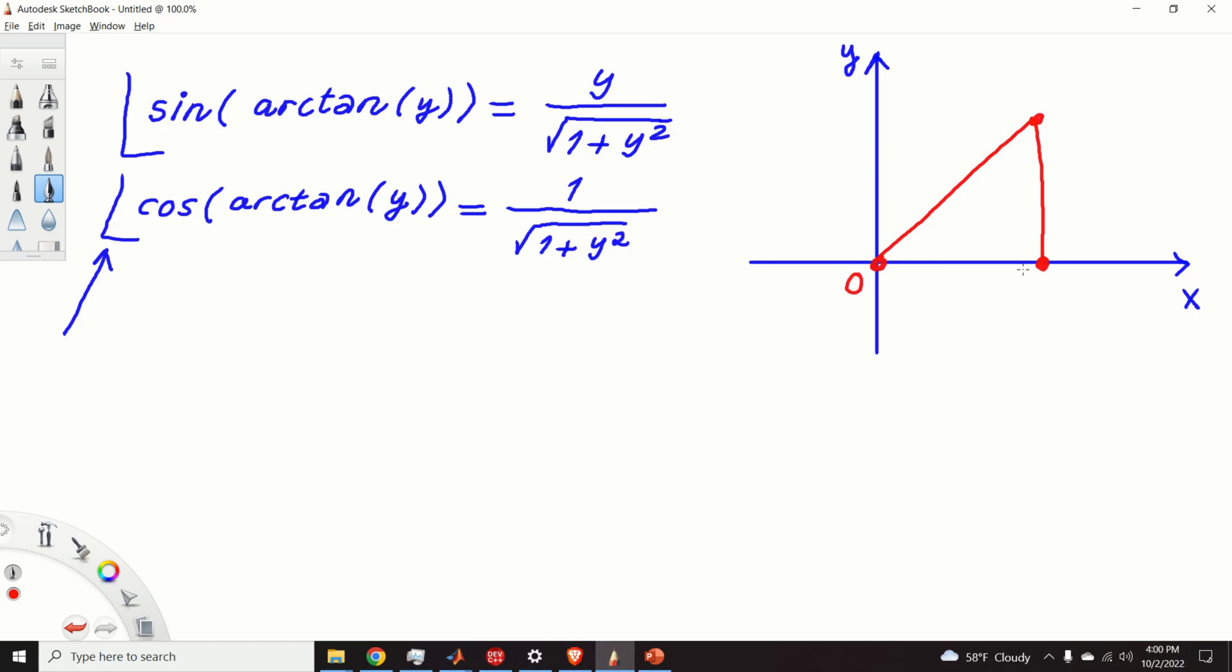This is the origin point, this is the point A, and this is the point B. Let the coordinates of the point A be (1, 0), and let the coordinates of the point B be (1, y). And let this angle be 90 degrees.